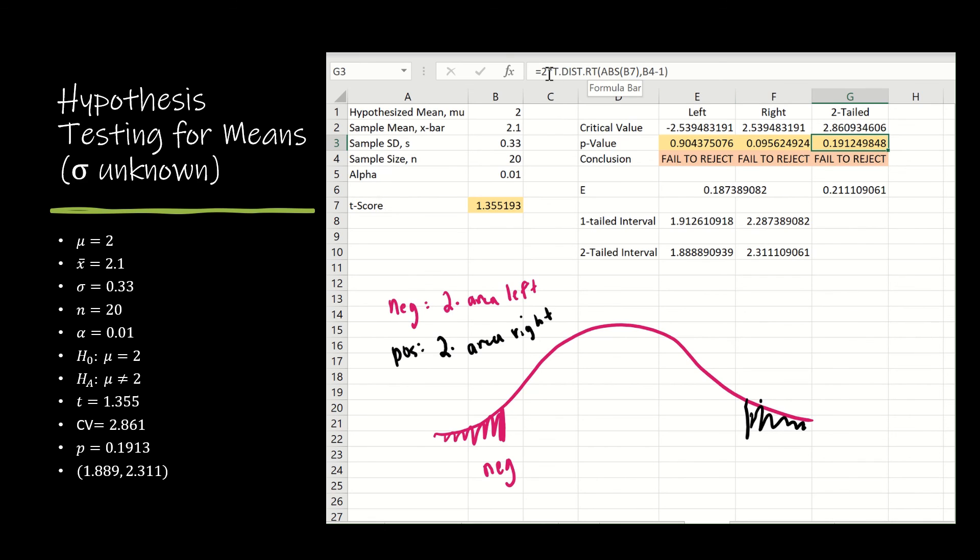And then I'm going to take t dist right of that comma degrees of freedom, and then I'm going to take it times two. And so that's going to give me my P value.